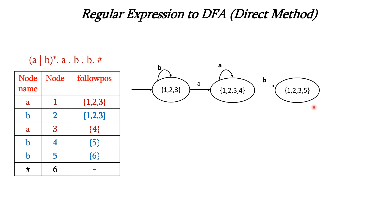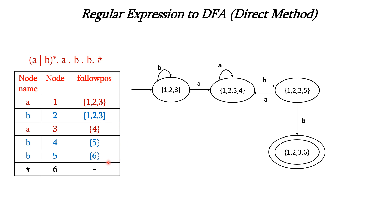For state {1,2,3,5} on input A: nodes 1 and 3 are A, union of followpos = {1,2,3} ∪ {4} = {1,2,3,4}. On input B: nodes 2 and 5 are B, union = {1,2,3} ∪ {6} = {1,2,3,6}. So {1,2,3,5} on A → {1,2,3,4} and on B → {1,2,3,6}. For state {1,2,3,6} on input A: nodes 1 and 3 are A, followpos = {1,2,3,4}. On input B: only node 2 is B, so followpos = {1,2,3}.